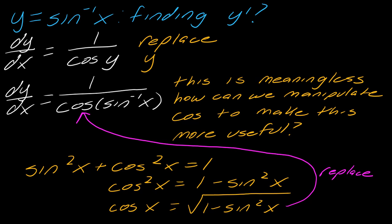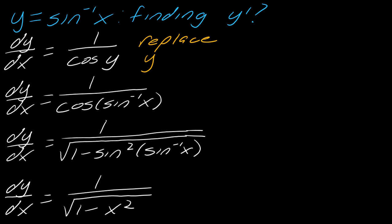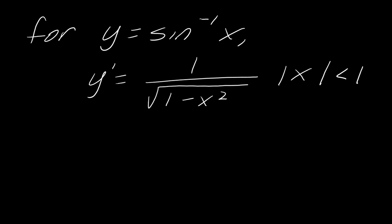Now I can replace cosine with that square root expression. Wherever cosine of y was, I've replaced it with the square root of one minus sine squared y. Now I can also replace y with inverse sine of x. That gives me the square root of one minus sine squared of inverse sine of x. Since sine composed with inverse sine simplifies, sine squared of inverse sine of x becomes x squared. So the derivative of inverse sine is one over the square root of one minus x squared, with the restriction that the absolute value of x must be less than one — which relates back to the domain and range discussion.